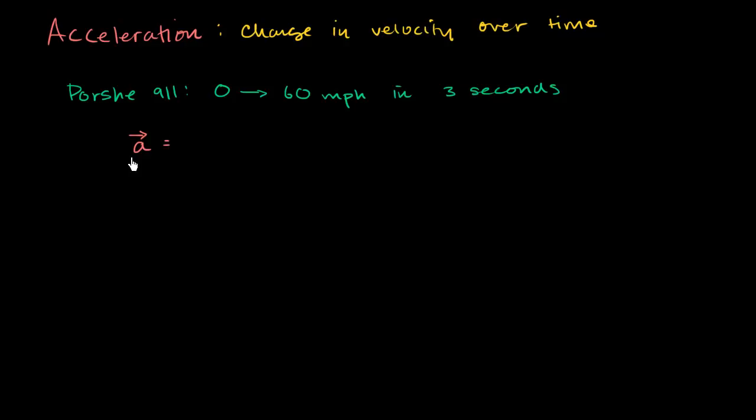So the acceleration here, and we're just going to assume that we're going to the right. 0 miles per hour and 60 miles per hour to the right. So it's going to be change in velocity. So let me just write it down with different notation, just so you can familiarize yourself if you see it in a textbook this way.